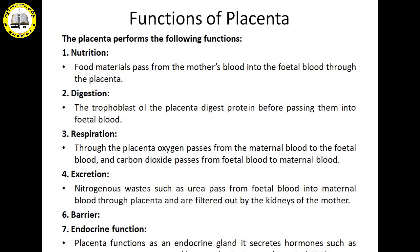Simultaneously, placenta also works as an endocrine gland, secreting important hormones — especially human chorionic gonadotropin (hCG) hormone — which helps in maintaining the placenta as well as the embryo. Human chorionic gonadotropin hormone is very important for the proper development of the embryo. So, on the basis of extra-embryonic membranes, the villi that develop, and histology, we can divide placenta into different categories. This is all about the structure, function and development of placenta. Thank you.